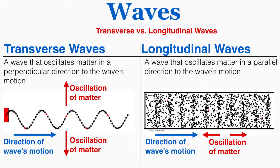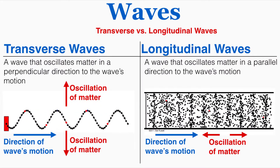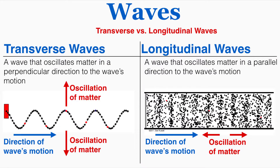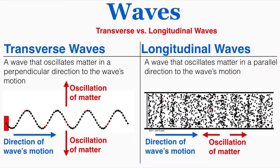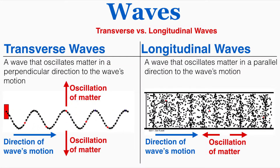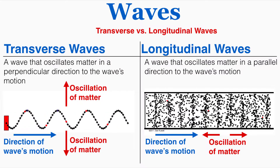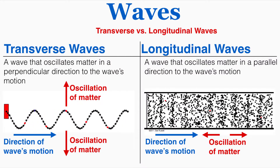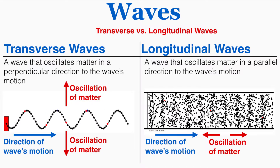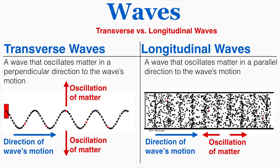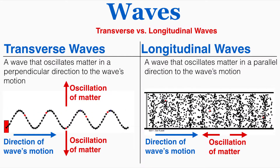In the longitudinal wave you can see that the wave is moving from left to right and the particles in the wave are also oscillating back and forth from left to right. So they're oscillating in a parallel direction to the direction of the wave. That's what makes the wave on the right a longitudinal wave.